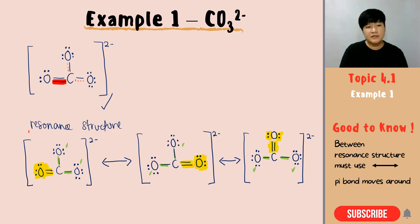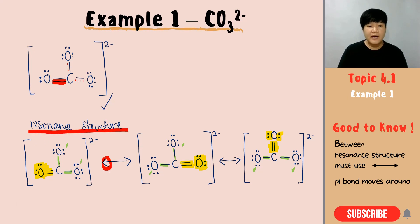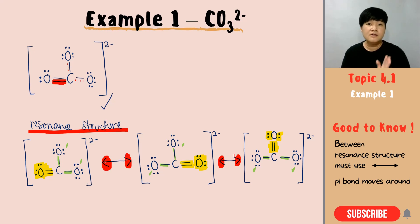Since they are resonance structures, the arrow you must use between them is also a double-headed arrow to prove that they are resonance structures.